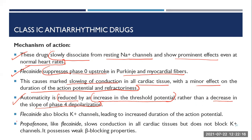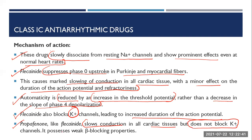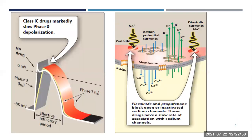Automaticity is reduced by an increase in threshold potential rather than a decrease in slope of phase 4 depolarization — this distinguishes Class 1c from Class 1a drugs. Flecainide also blocks potassium channels, leading to increased duration of action potential. Propafenone, like flecainide, slows conduction in all cardiac tissue but does not block potassium channels and possesses weak beta-blocking properties, partially resembling Class 2 anti-arrhythmic drugs. Class 1c drugs markedly slow phase 0 depolarization.